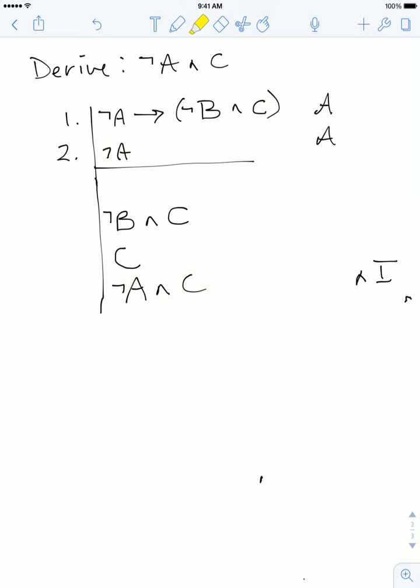We ask the question again: where could I get this from? Does the sentence ¬B ∧ C appear anywhere in my assumptions? Lo and behold, yes it does—right there. It's the consequent of a material conditional. Furthermore, I've already got the antecedent, so I can write down ¬B ∧ C by using the conditional elimination rule. That actually completes the derivation.